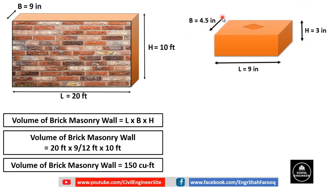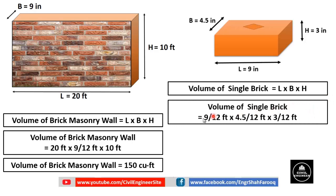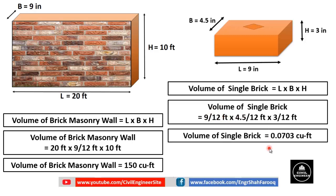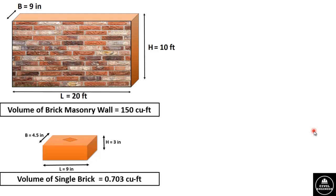Volume of a single brick is calculated using the same formula: Volume = Length × Breadth × Height. Putting in the values: 9 × 4.5 × 3, with each dimension divided by 12 to convert inches to feet. After calculation, the volume of a single brick is 0.0703 cubic feet.